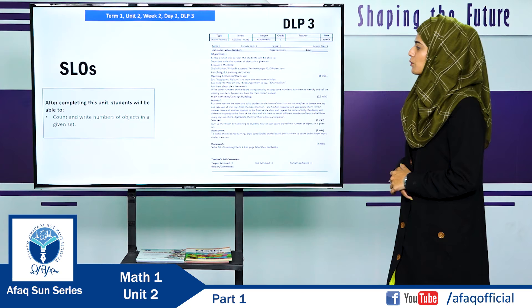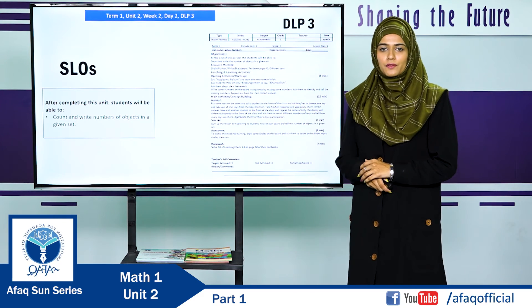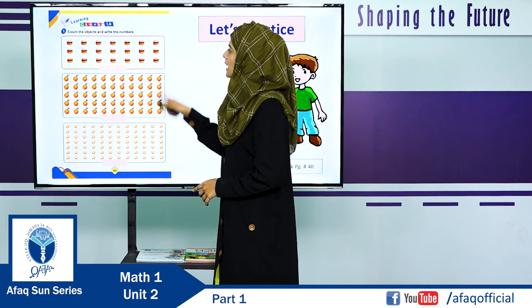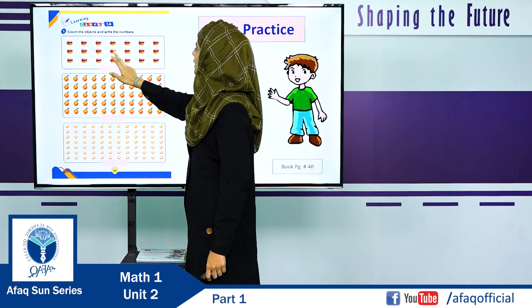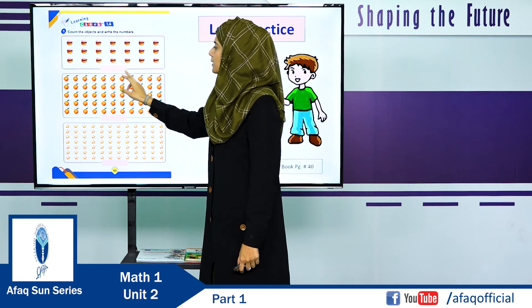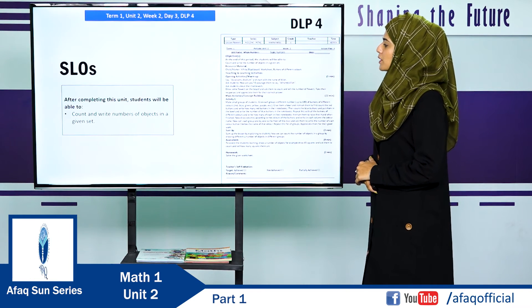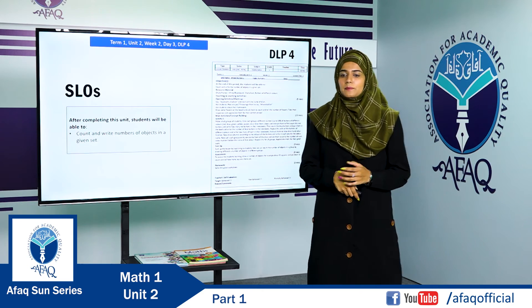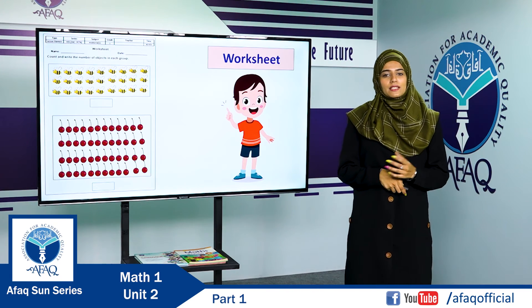In this SLO, we are going to count and write numbers of objects in a given set. The methodology has been provided in DLP 3, Term 1, Unit 2, Week 2, Day 2. On page 40, count the objects and write the numbers. Here are some yummy cakes — let's count: 1, 2, 3, 4, 5, 6, 7, 8, 9, 10, 11, 12, 13, 14, 15, 16, 17, 18, 19, 20, 21. Write 21 in the answer box. DLP 4 provides a worksheet to count and write numbers of objects; solve it based on the methodology discussed.